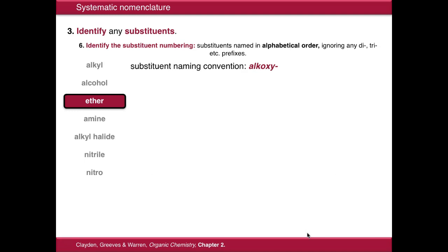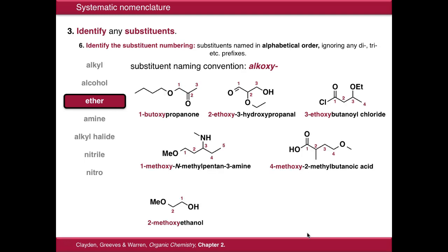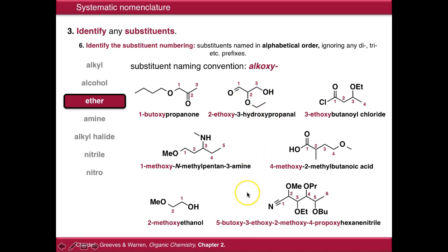Ether groups have an alkoxy naming convention, very similar to how the alkyl groups work but with alkoxy. So: 1-butoxypropanone because we have a butoxy group here; 2-ethoxy-3-hydroxypropanone because we have an ethoxy group here. Here's an example of how to assemble a name with multiple substituents: 5-butoxy-3-ethoxy-2-methoxy-4-propoxyhexanenitrile. Note that it would be tempting to list them in number order, but as I was saying before, it goes in alphabetical order — B comes before E, comes before M, comes before P.